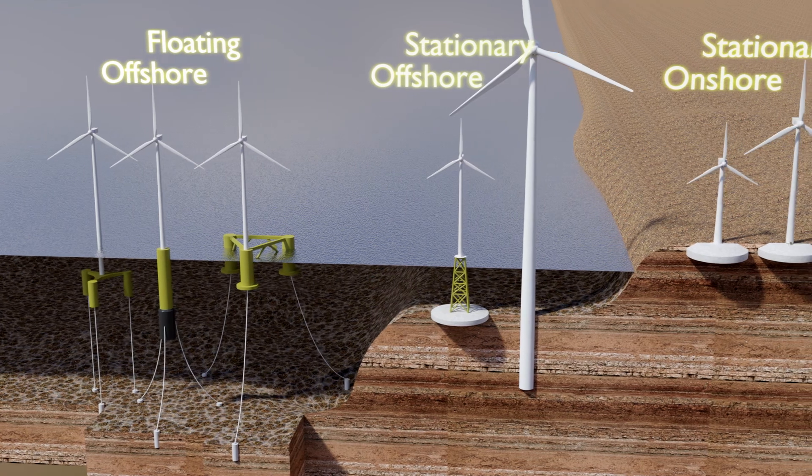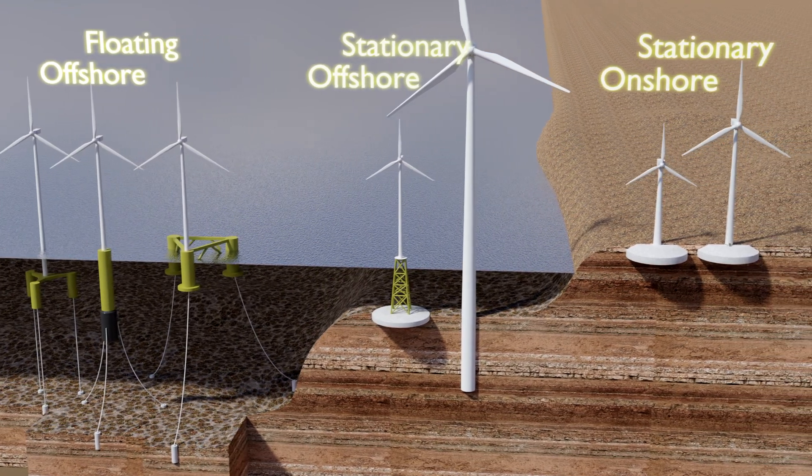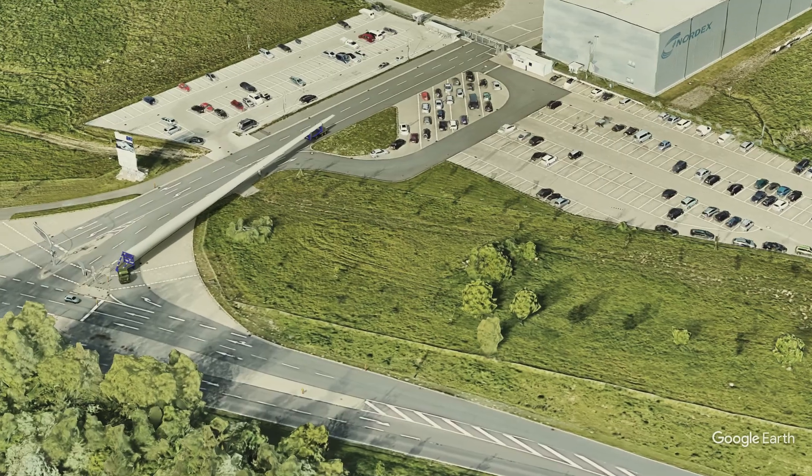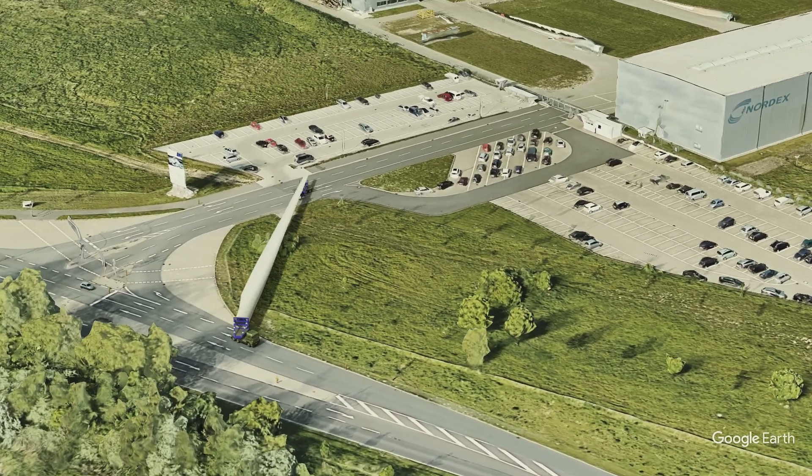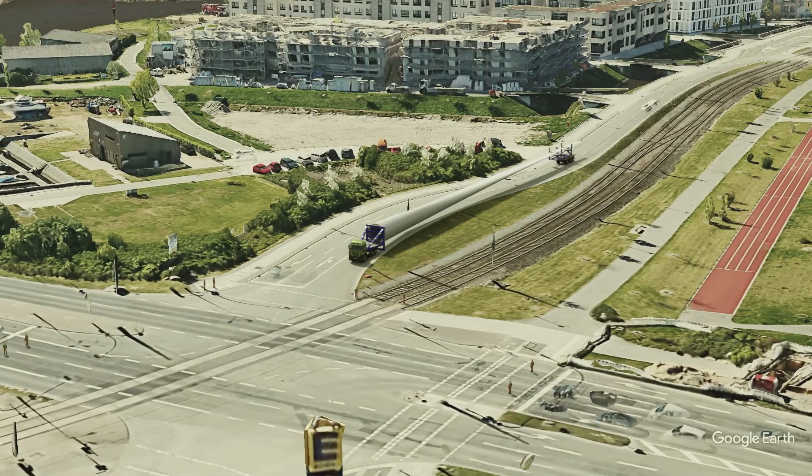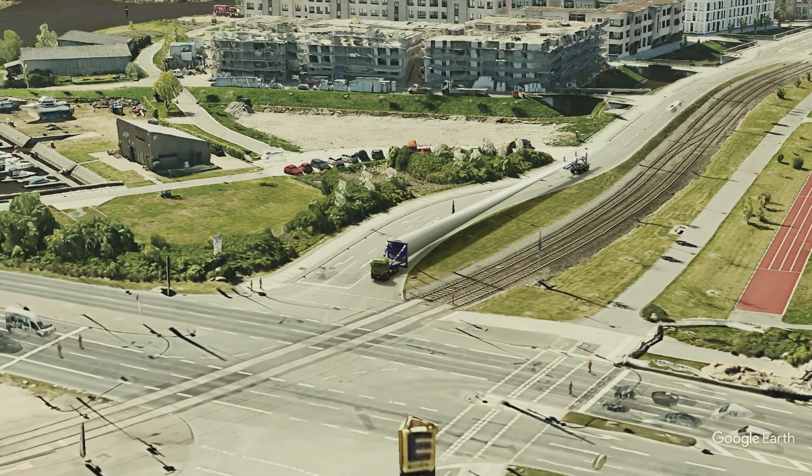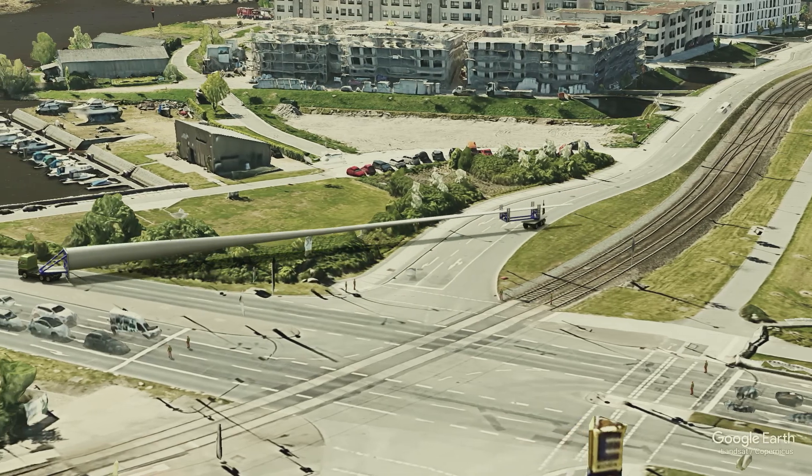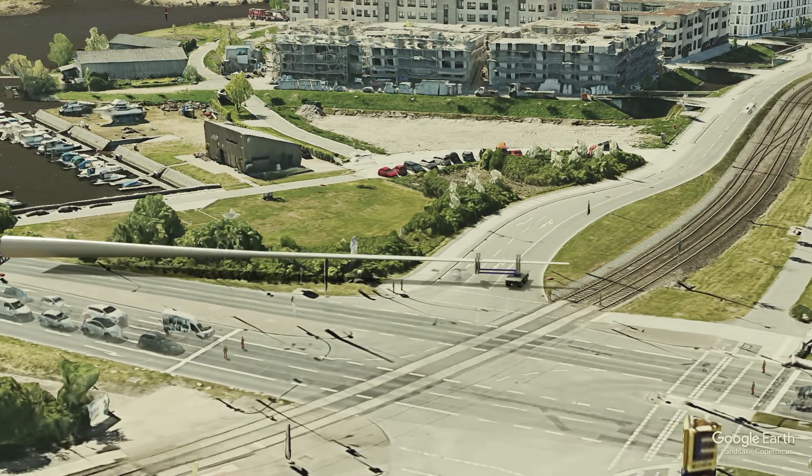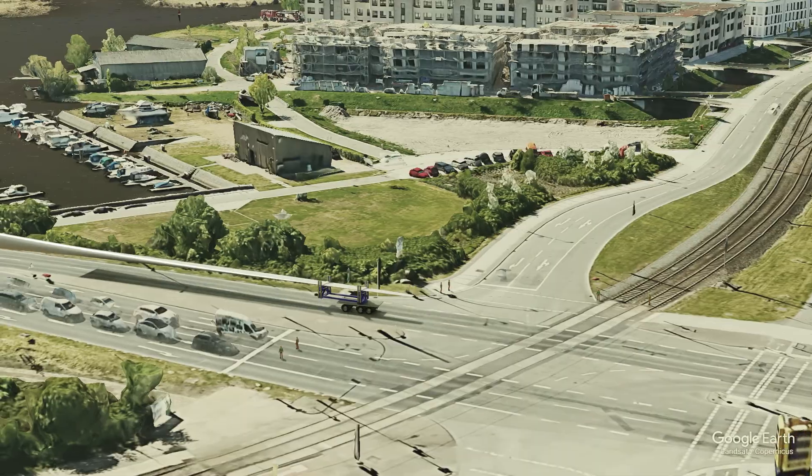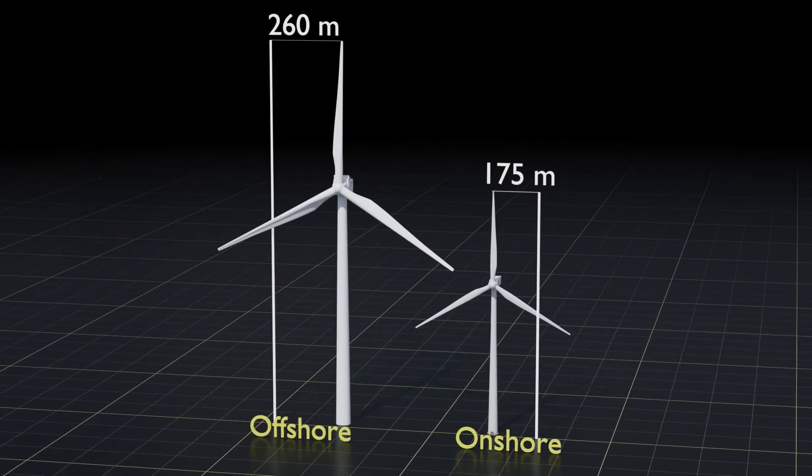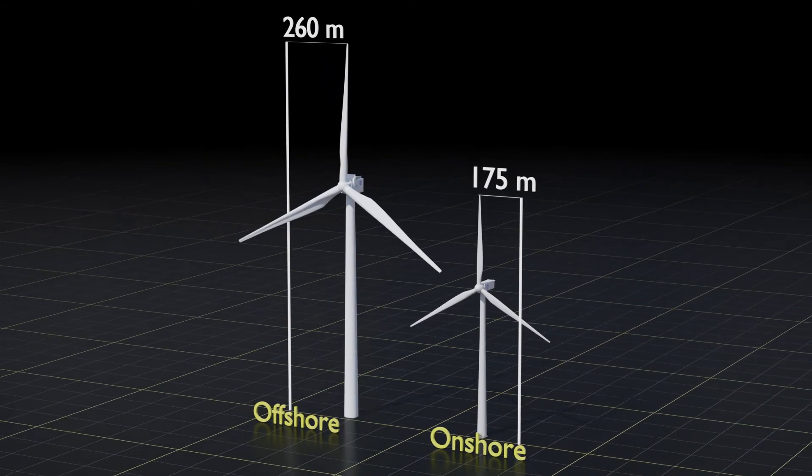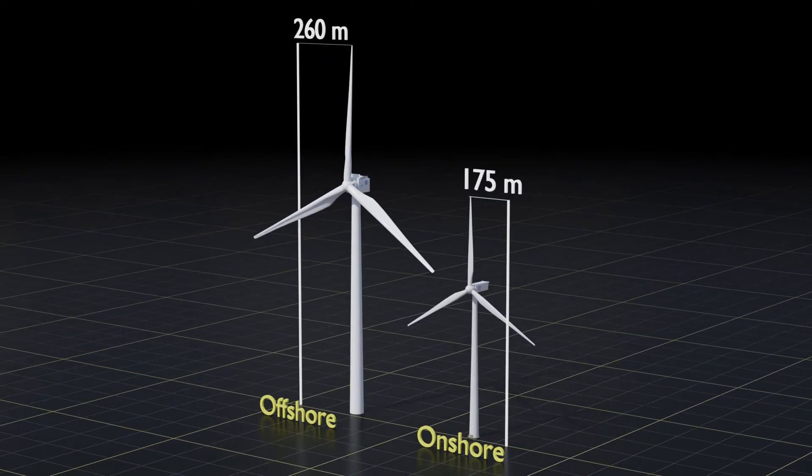Offshore turbines differ from their land-based twins only in size and method of installation. Such large turbines are not installed on land because the transportation of turbine parts takes place on ordinary roads, and it is almost always impossible to transport such large parts through city streets. While on land the largest turbine is about 175 meters high, an offshore turbine can reach 260 meters in height.